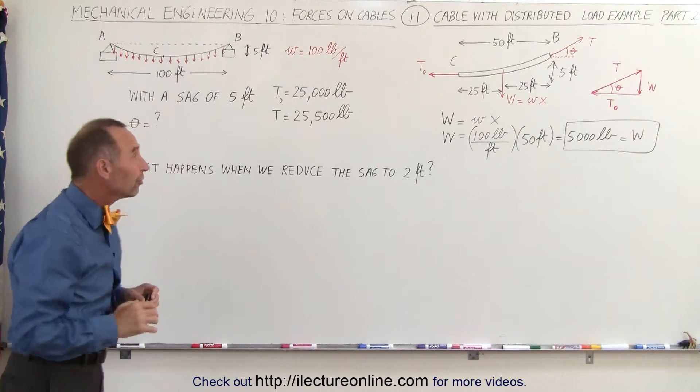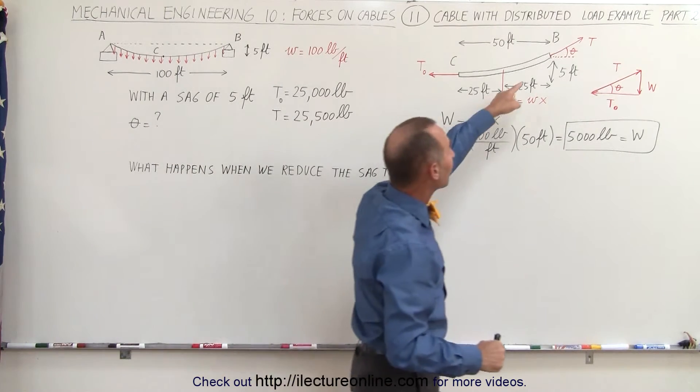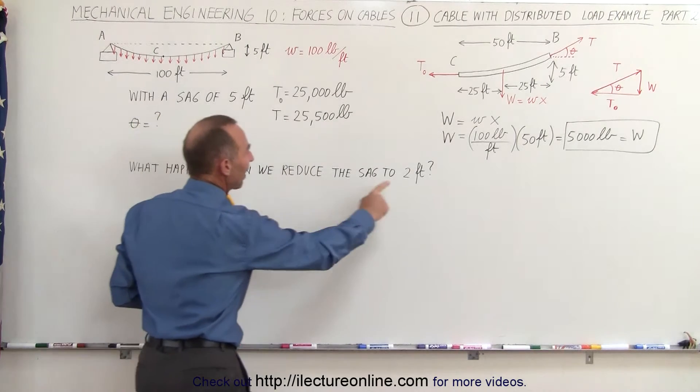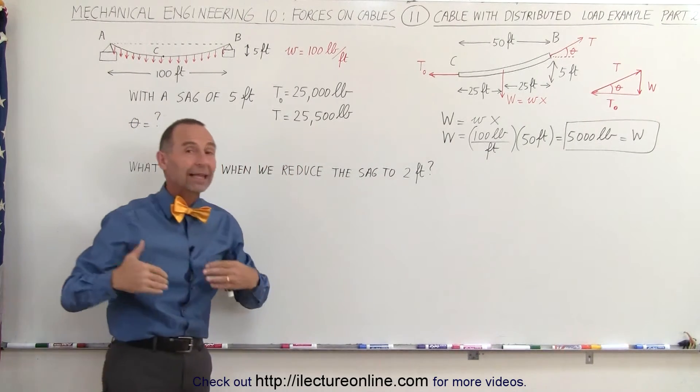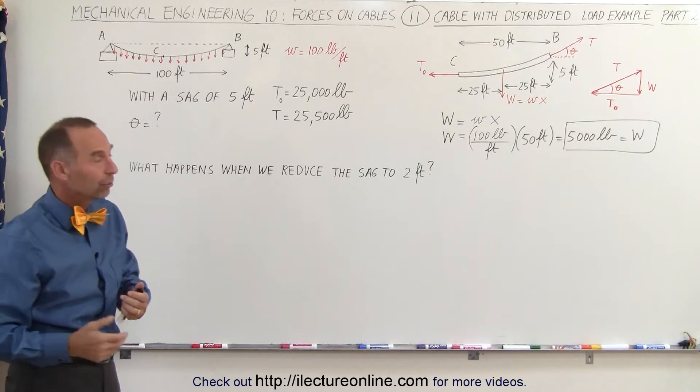Now what we're going to do first is calculate the angle the cable makes with the horizontal at the endpoint, and then what we're going to do is reduce the sag to just two feet to see how that actually changes the tension in the cable and the angle for the cable.